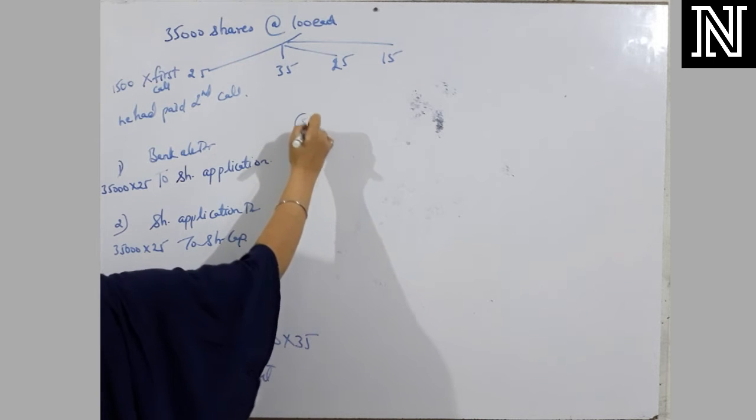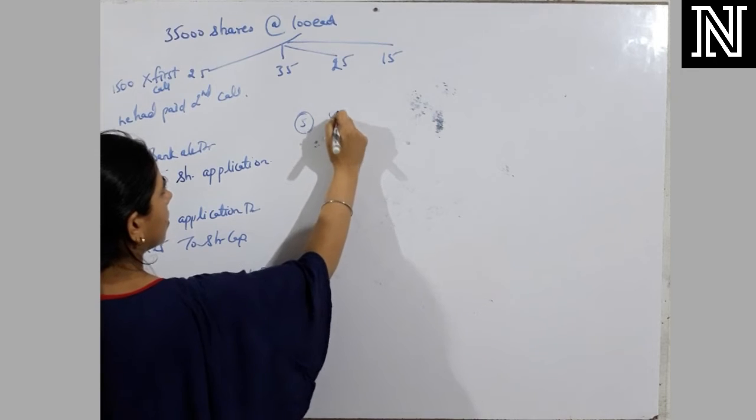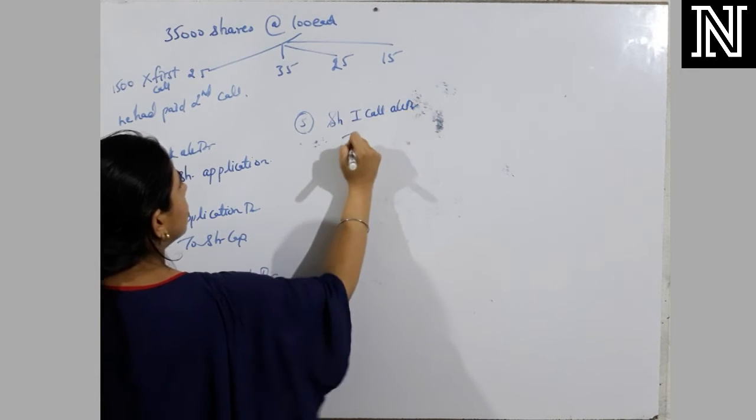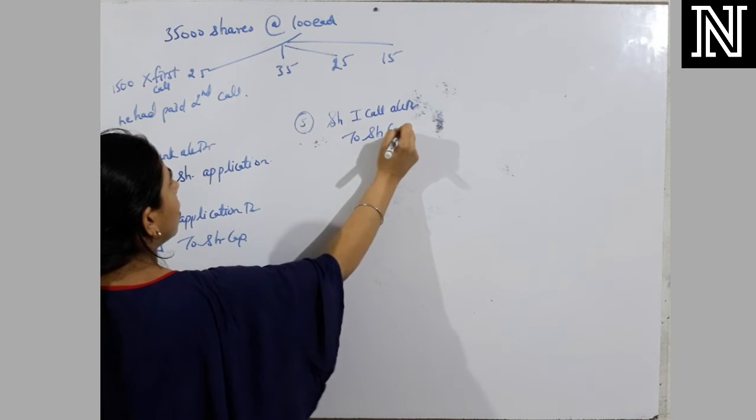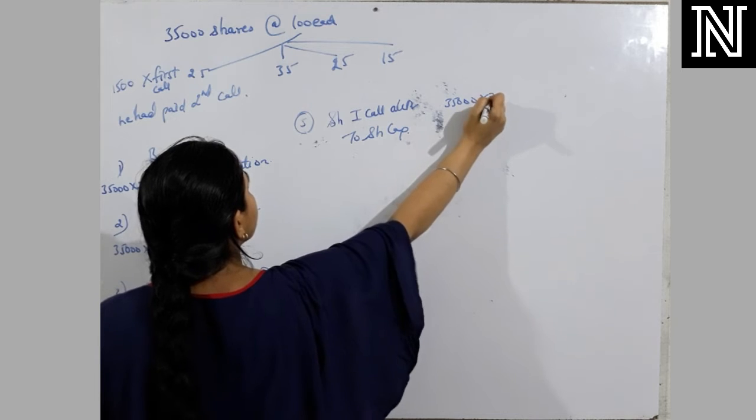Now what will be the fifth entry for due? Due entry, what will be? Fifth entry, share first call account debit to share capital account. And here also 35,000 into 25.